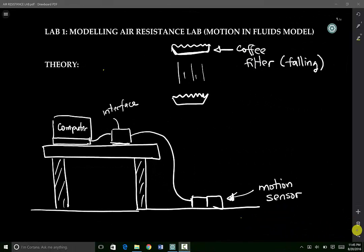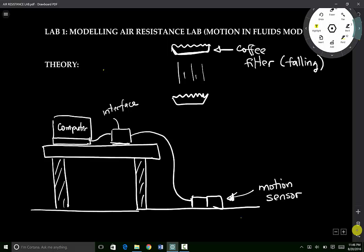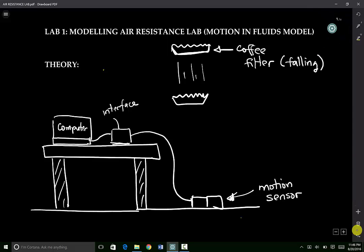Hello everyone. In this tutorial we will review the basic concepts that you require in order to be successful in Lab 1, which is basically modeling air resistance. The lab consists of coffee filters, a motion sensor, a computer interface, and a computer. You are required to determine or model the drag force experienced by a coffee filter falling through air. Let us start by reviewing some of the concepts that you need.